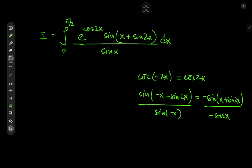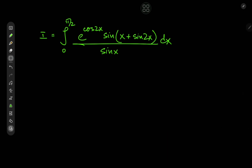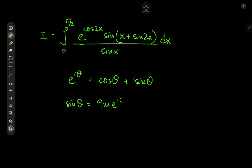Coming back to the target integral — how on earth do you expect to solve this thing? Well, I see trig functions and exponentials, so we should definitely invoke Euler's beautiful formula. We know that e to the iθ equals cosine θ plus i times sine θ. In other words, sine θ is the imaginary part of e to the iθ. This implies that sine x plus sine 2x equals the imaginary part of e to the i times (x plus sine 2x).